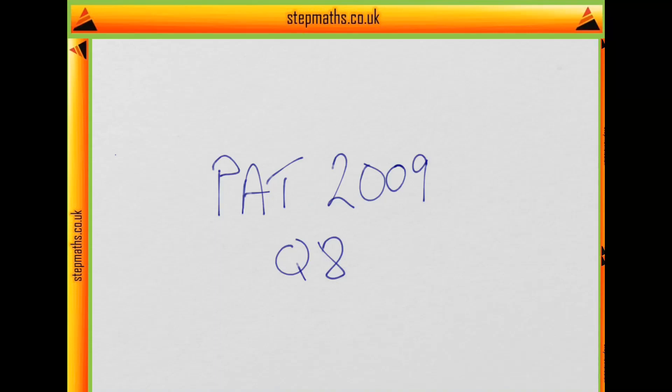Hi, today we're going to look at the paper from 2009, going through question 8. Question 8 asks to sketch the curve y equals 1 minus 2 sine squared x for minus pi less than x less than pi.